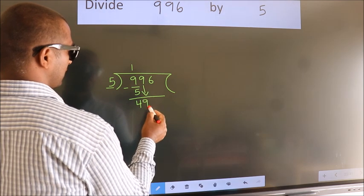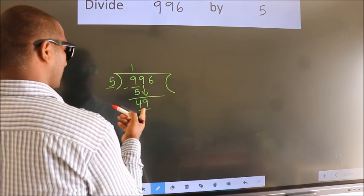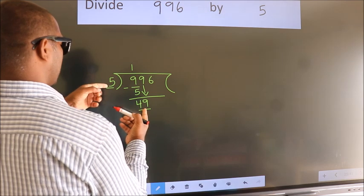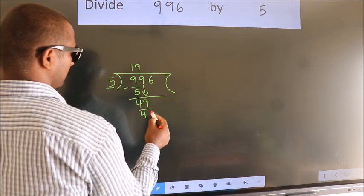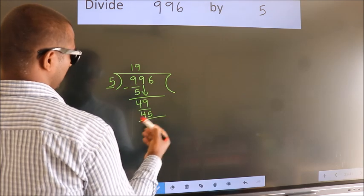So 9 down, so 49. A number close to 49 in the 5 table is 5 times 9, which is 45. Now we subtract.